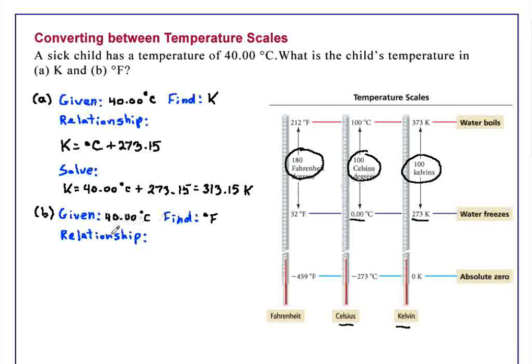So degrees Fahrenheit is equal to 180 over 100 degrees Celsius. And whereas the Celsius scale has the freezing point of water being exactly zero, that is 32 on the Fahrenheit scale. So we have to add 32 to this. So degrees Fahrenheit equals 1.8 degrees Celsius plus 32.